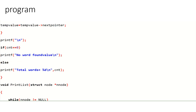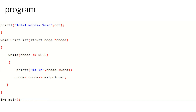The printf statement returns the word using temp, which stores the address and word. When cnt equals zero, it prints 'no word found'. When cnt equals 1 or more, it prints the words found in the dictionary, jumps to the else statement, and prints the total words in the dictionary. This completes the search function.